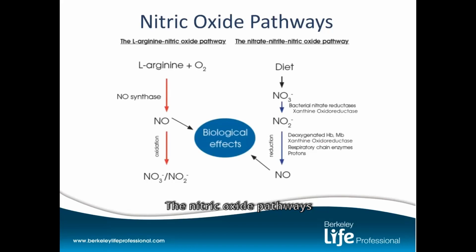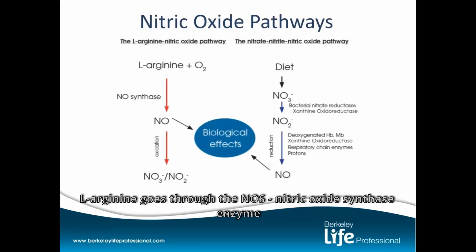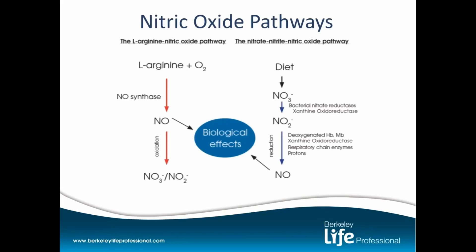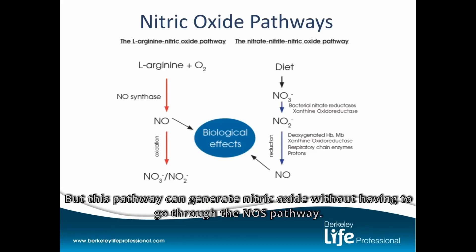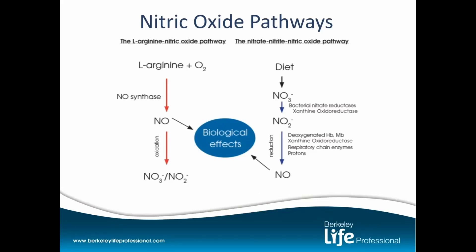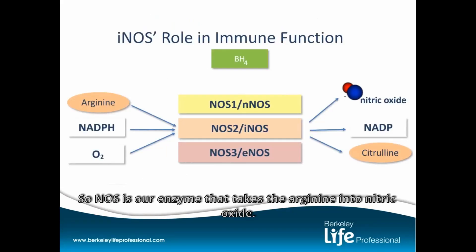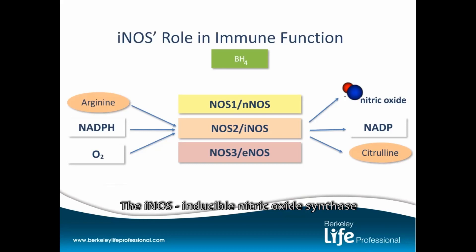The nitric oxide pathways: arginine goes through the NOS — nitric oxide synthase — enzyme and is oxidized into nitric oxide. The nitrate-to-nitrite-to-nitric oxide pathway is diet or supplement based, and it can generate nitric oxide without having to go through the NOS pathway. The iNOS, inducible nitric oxide synthase, is specifically associated with our immune response.